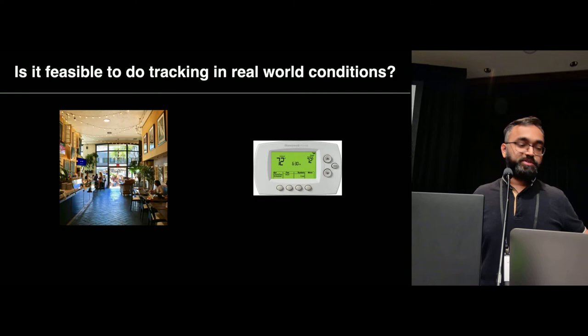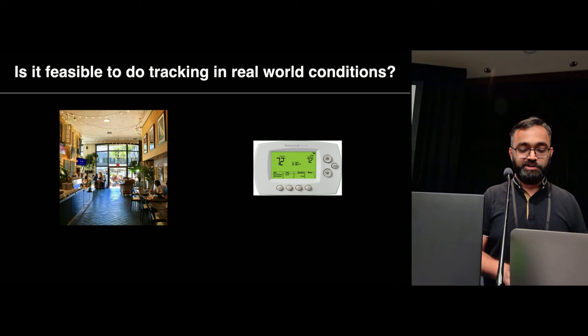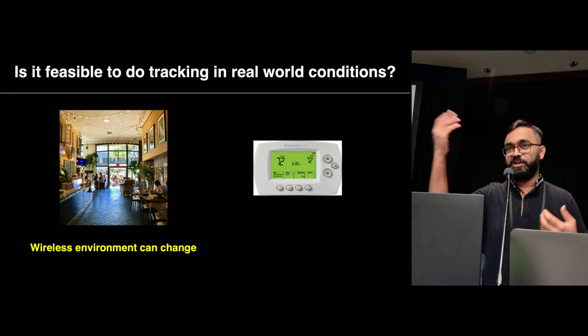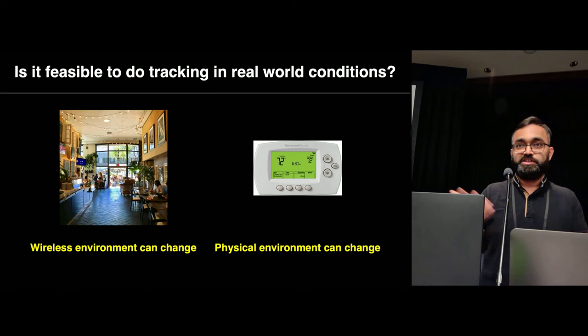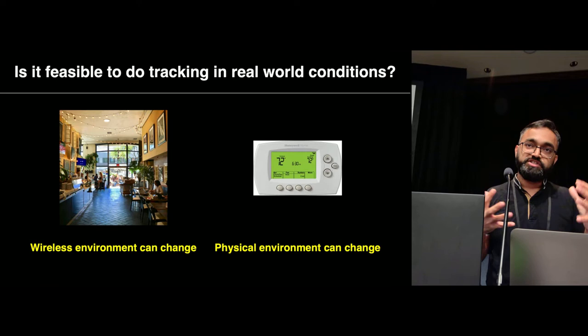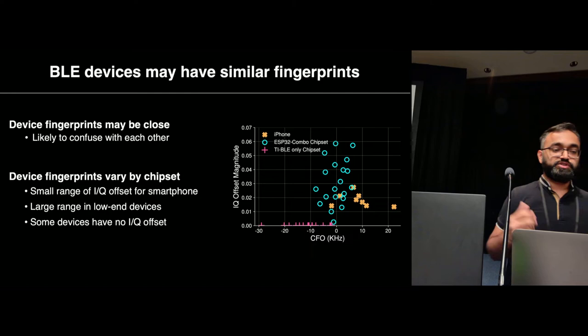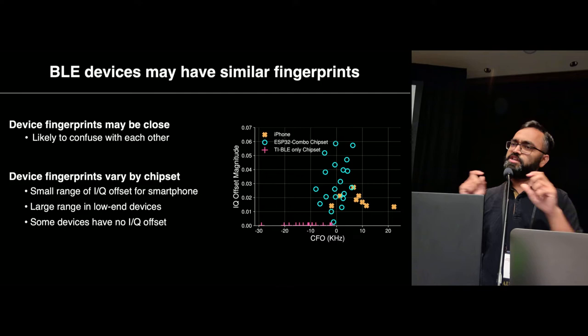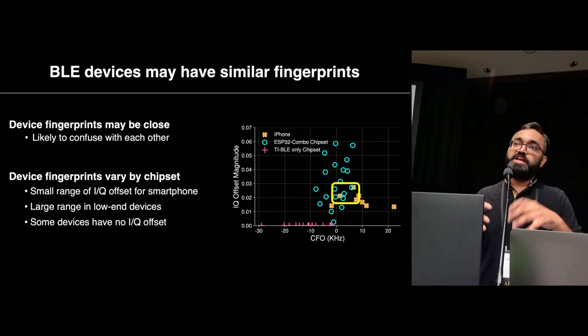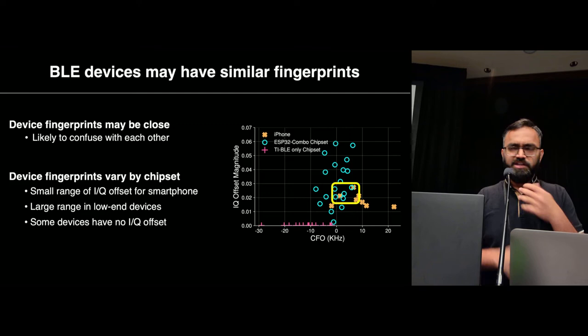The big question is: can an attacker actually perform physical tracking in the real world? In the real world, the wireless environment can change — coffee shop, library, hallway — and physical parameters like temperature also change. We tried to evaluate some of the challenges. The first challenge we found is that in the real world, when you observe a lot of devices, many devices actually have very similar fingerprints. So there's a higher likelihood of confusing them compared to devices with more distinct fingerprints.